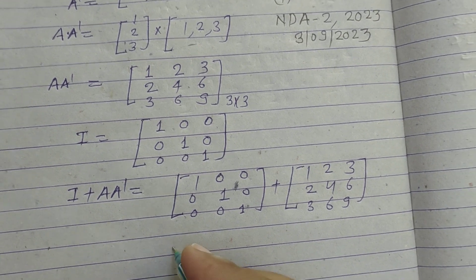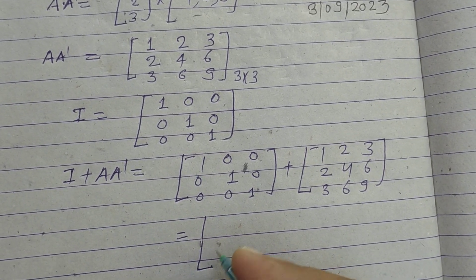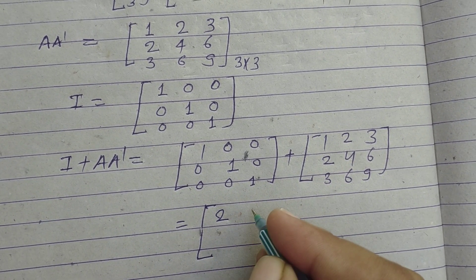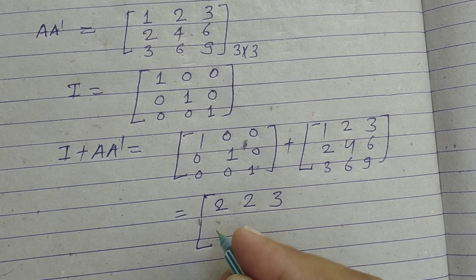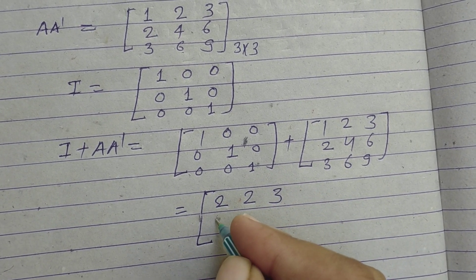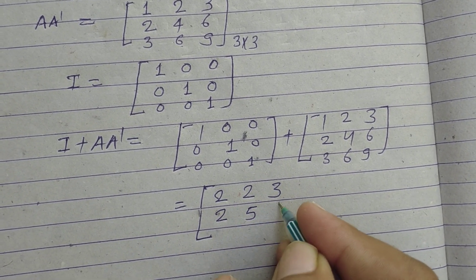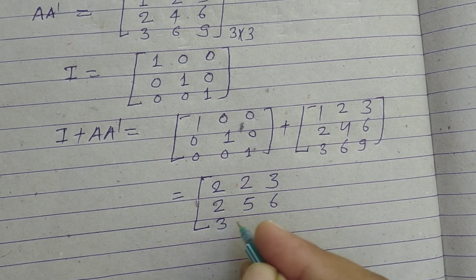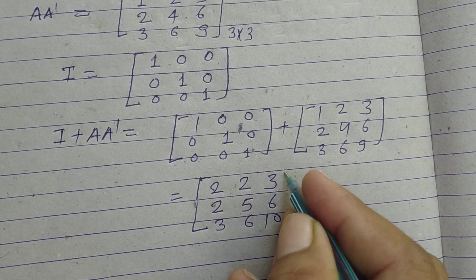Now adding, we get I plus AA dash equals the matrix: first row 2, 2, 3; second row 2, 5, 6; third row 3, 6, 10.